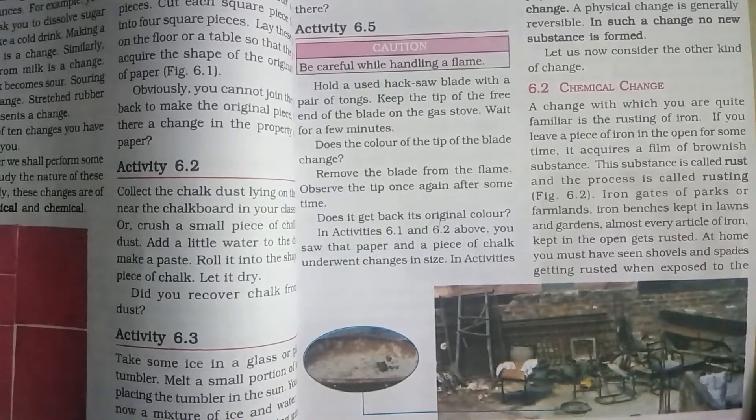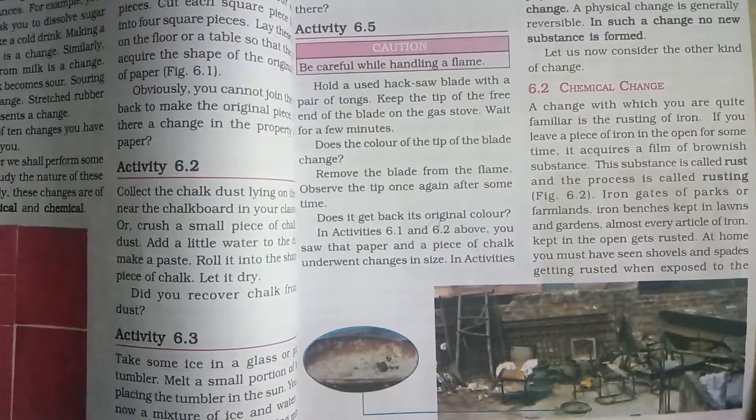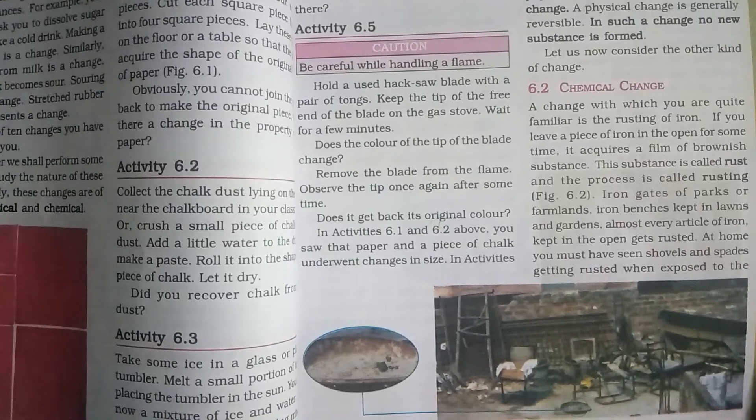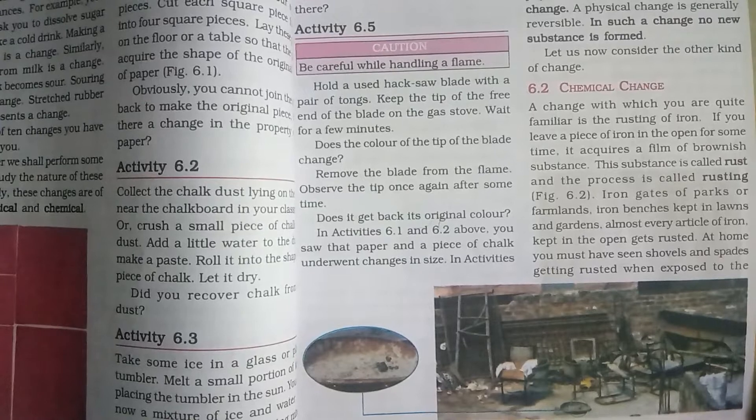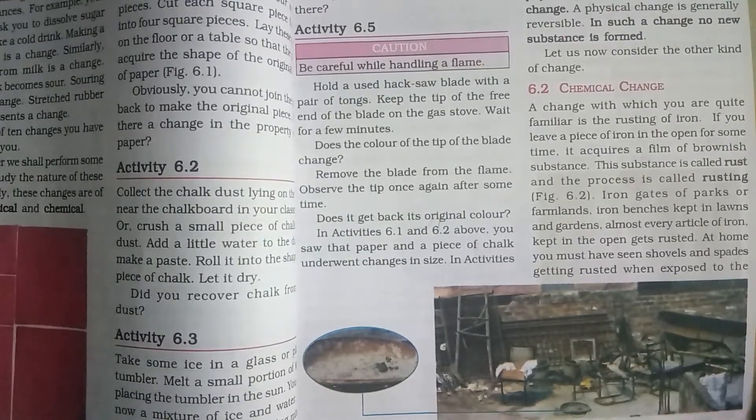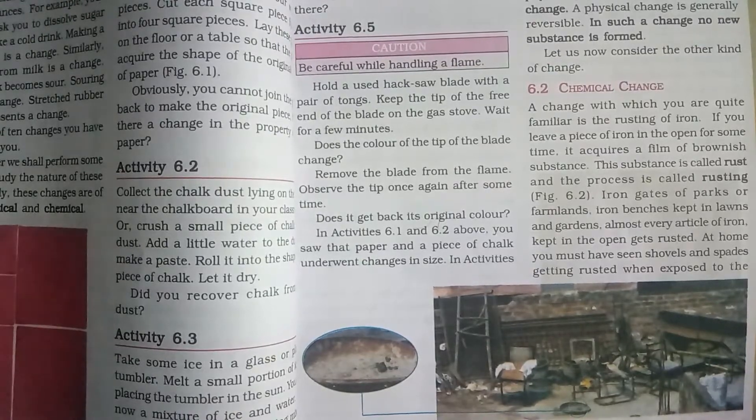Iron benches, even windows. All these will turn to brown color because they tend to react with the oxygen present in the atmosphere. The product we get is rust and the process is called rusting.